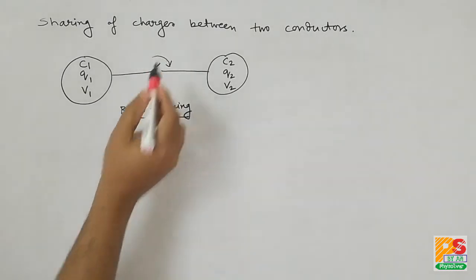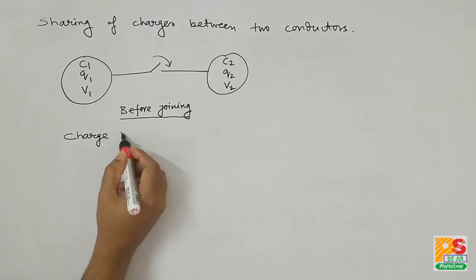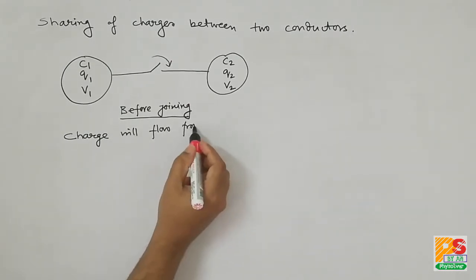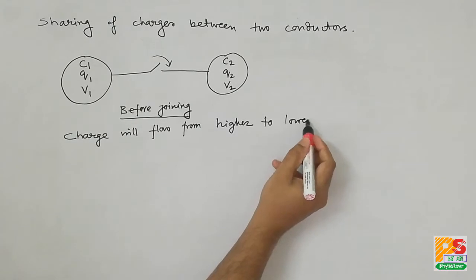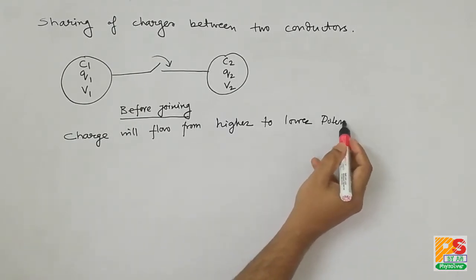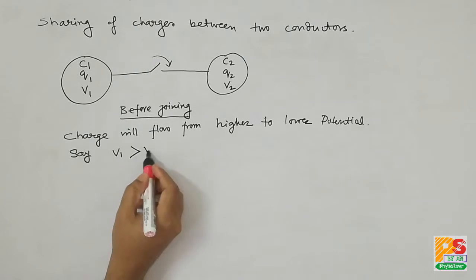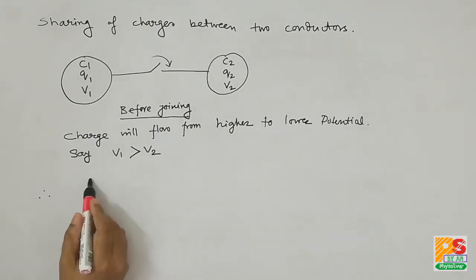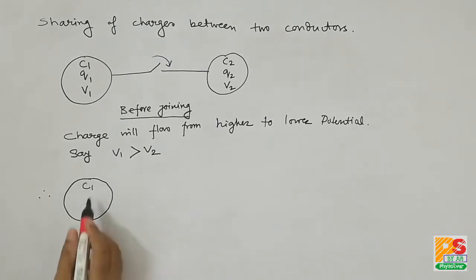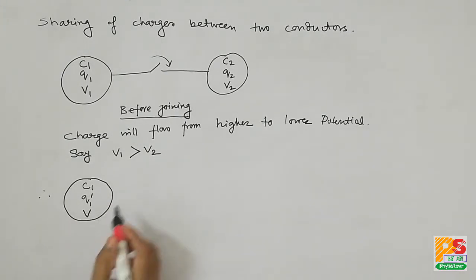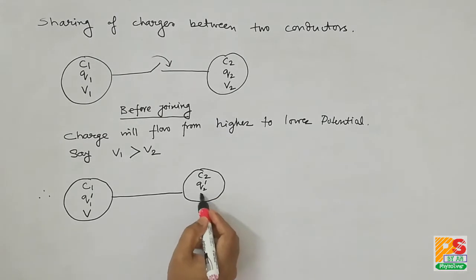Now if they are joined, what will happen? Charge will flow from the conductor which has higher potential to the conductor which has lower potential. Suppose in this case V1 is greater than V2, therefore charge will flow from the left one to the right one. After completion of the sharing of charges, capacitance doesn't change but charge will of course change.